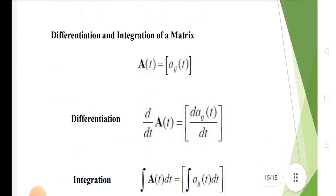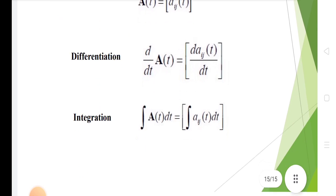In differentiation and integration of a matrix, differentiation of A(t) equals dAij/dt. This is differentiation. This is integration.